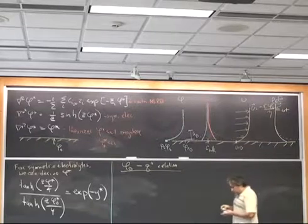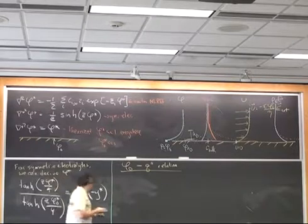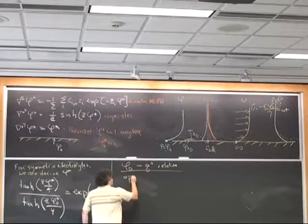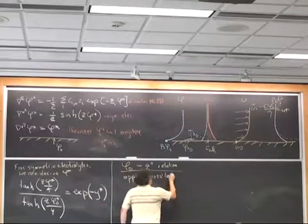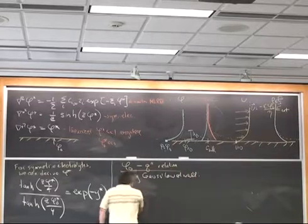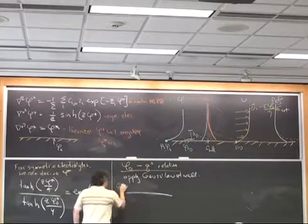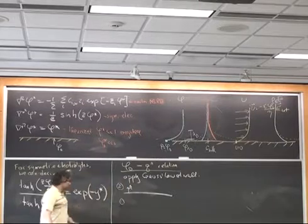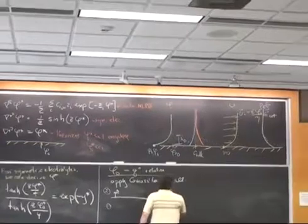And we do that basically by applying Maxwell's equations at the wall. So if we apply Gauss's law at the wall, in general, if we have a domain 1 and a domain 2 with a normal pointing in the direction from domain 1 to domain 2, we can write Gauss's law at the wall.